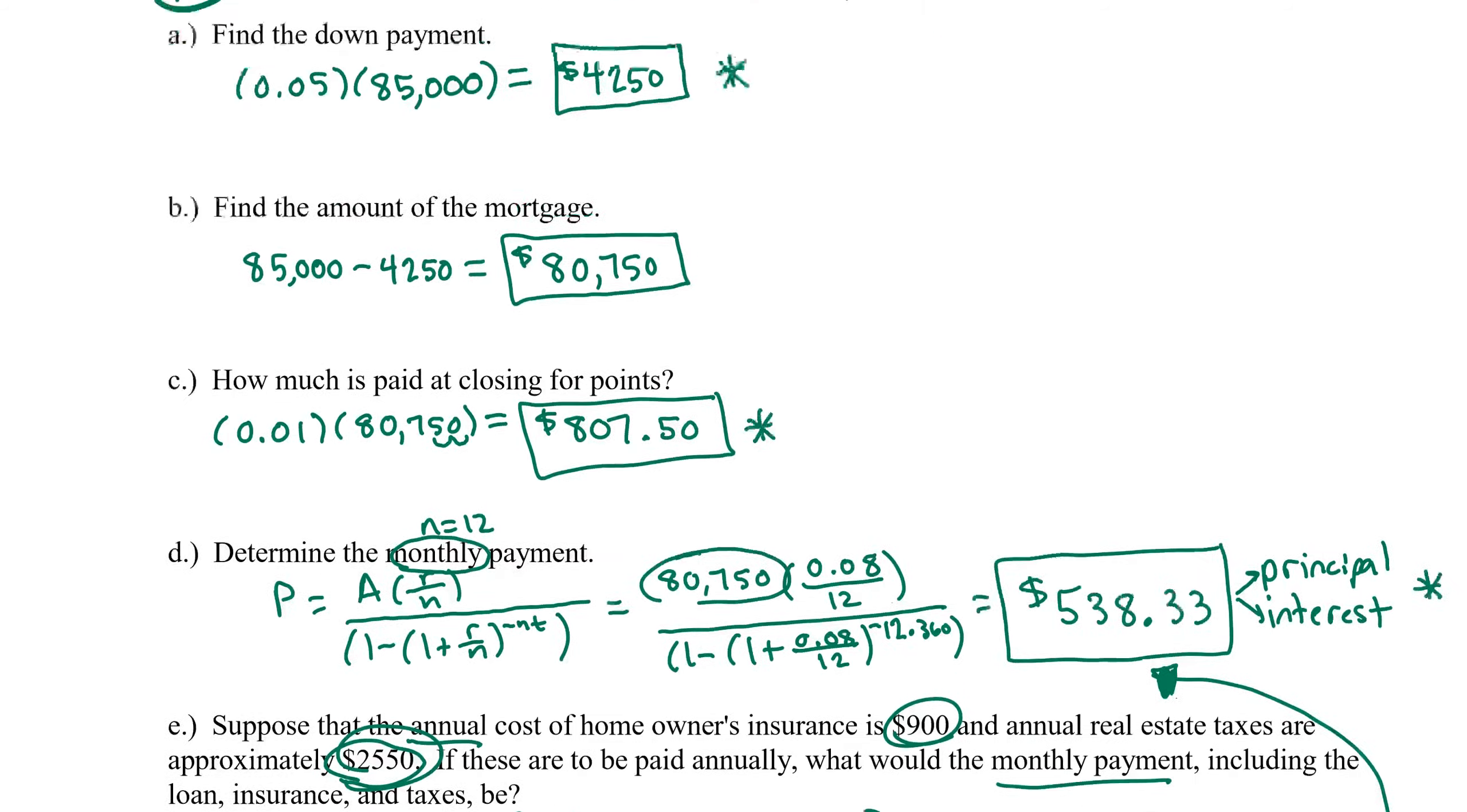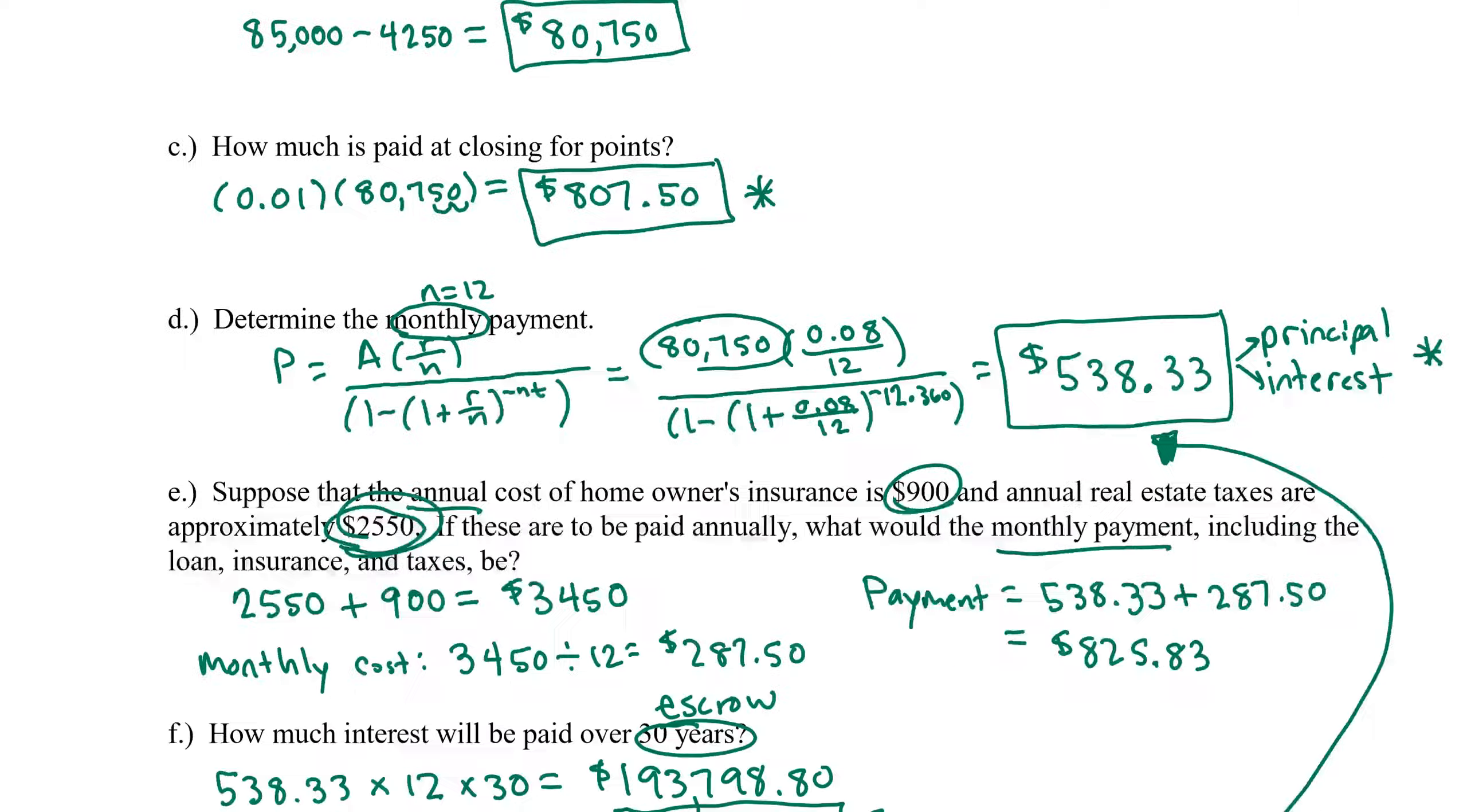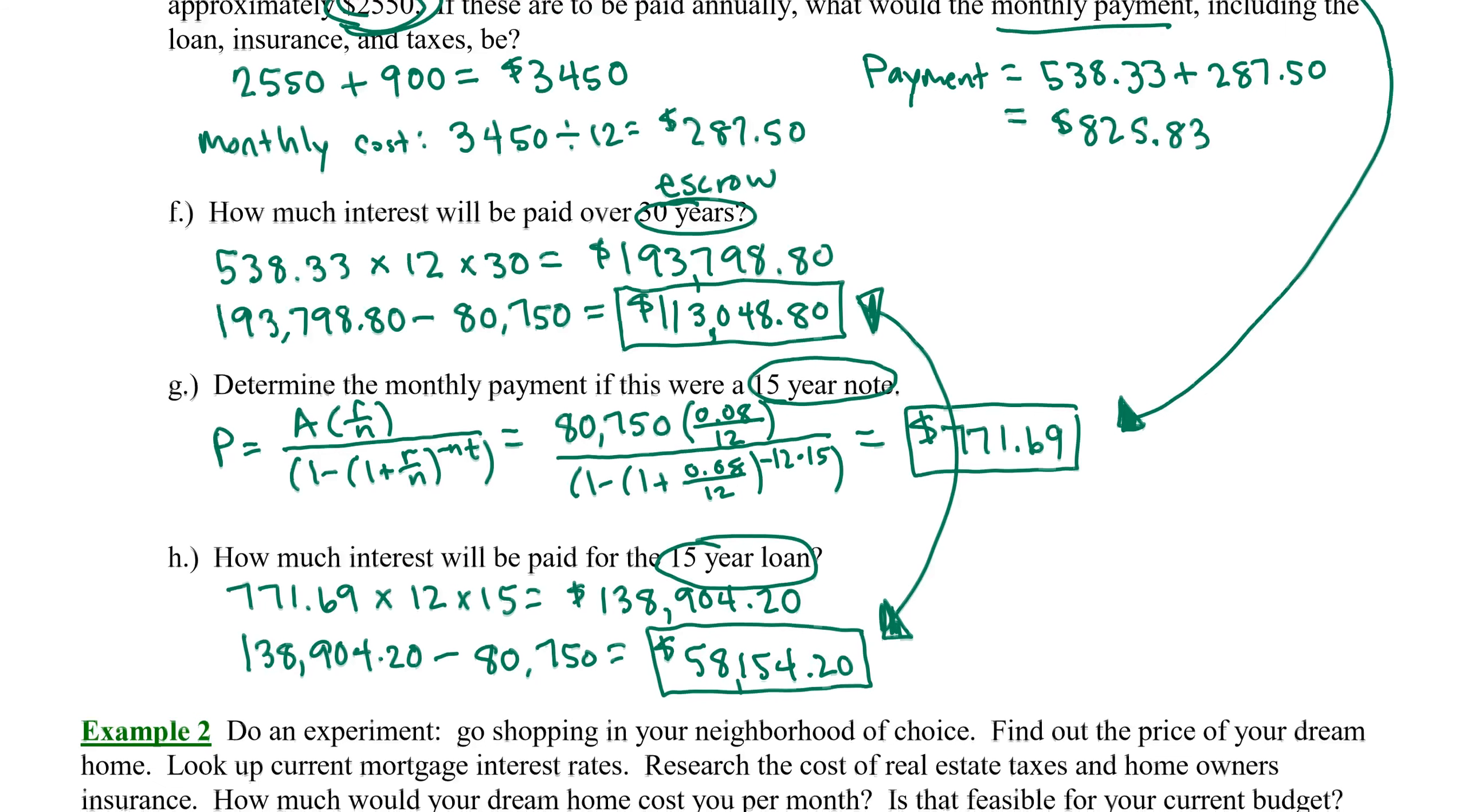You can also decrease the amount of interest that you pay by increasing your initial down payment. Remember on our initial down payment up here, it was interest-free. We did not pay that to the lender. We paid that directly to the price of the home. So if you can increase your down payment, that will decrease the amount of interest that you pay. In addition, a shorter note will vastly decrease the amount of interest that you pay.